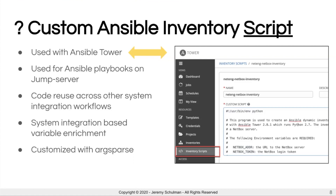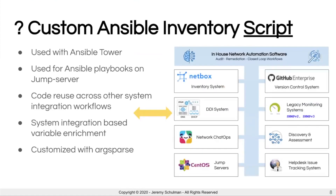We also use the same Ansible inventory script on our jump servers. So if somebody wanted to write their own playbooks and run them not through Tower, they're using the same exact code in both environments. Having that consistency is pretty important to make sure the same sets of features are available for the inventory script. The other aspect is that our inventory script allows us to pull data from all these other systems in our environment, using the same code across those systems when performing audit remediation workflows, or enriching host vars or group vars based on other systems — for example, pulling additional information from our discovery and assessment system.